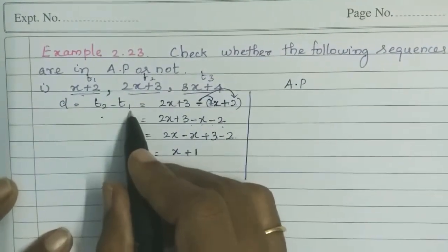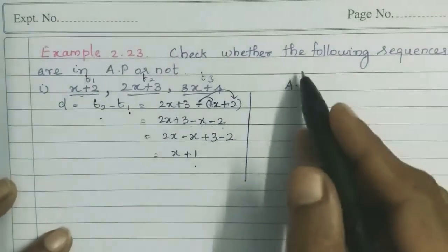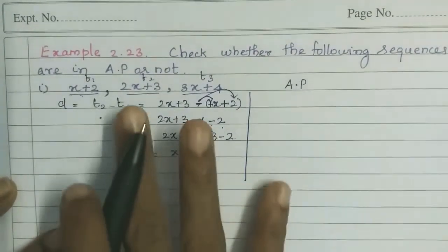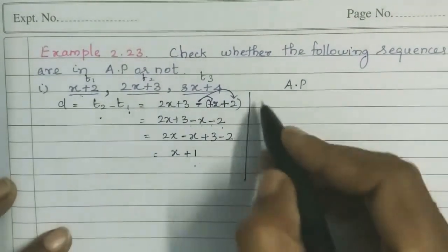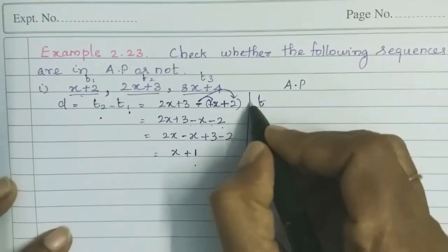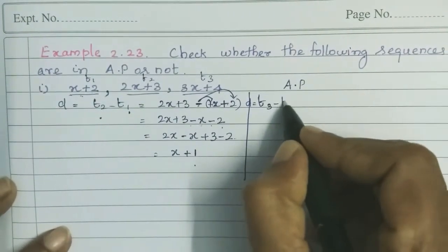Now, we have to find one more difference to confirm this is AP. At least we need to check that two differences are equal. So what do we do?